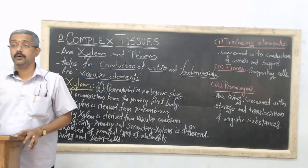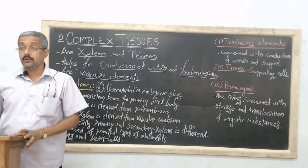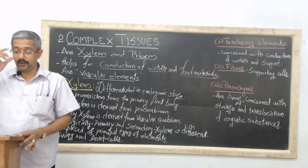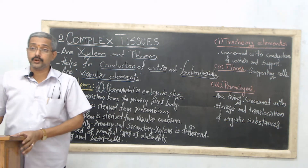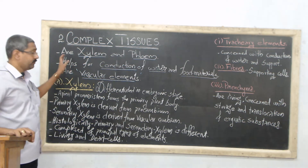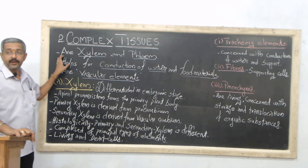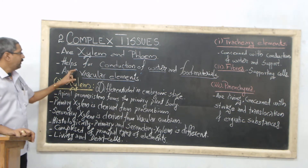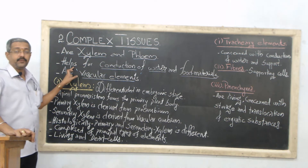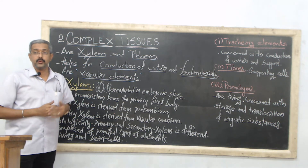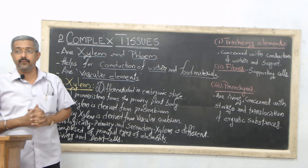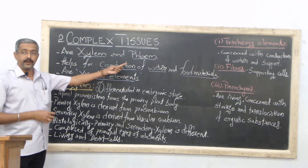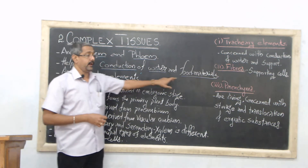Good morning. In this session we are discussing the second type of tissues. The first one is simple tissue, and the second one is complex tissue. Complex tissues are one of the major kinds of tissue found anatomically in the plant body. The complex tissues are xylem and phloem, differentiated inside the plant system in addition to simple tissues, to perform a specific function. The major function of xylem and phloem is the conduction of water and food materials.